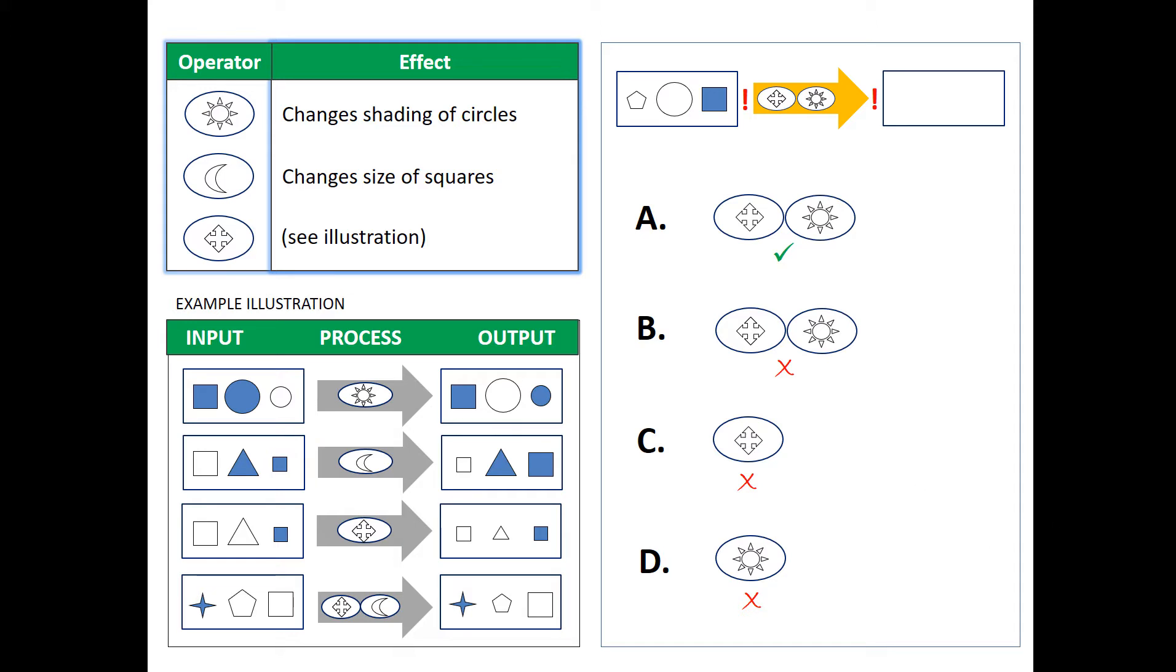So in this specific type of test, you have several specific sections, one that displays operators. Each of these operators, each of these shapes, have the effect of something. Basically, they change a set of shapes or symbols to something else. So there's an operator and there's an effect.